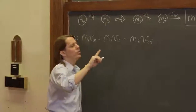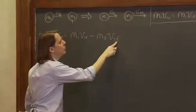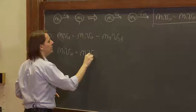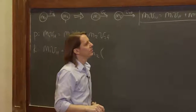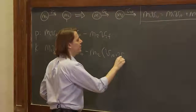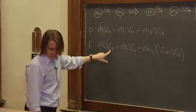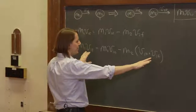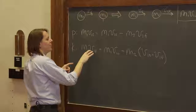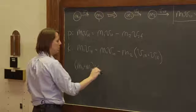We want to use the second equation to substitute for v2f, since both are unknowns and we need to eliminate one. So we replace v2f with (v1_initial + v1f), giving: m1·v1f = m1·v1_initial minus m2·(v1_initial + v1f). Now we need to collect the v1f terms. There's one on the left and one from expanding the right — it's minus m2·v1f — so bringing it over gives m1·v1f + m2·v1f, which is (m1 + m2)·v1f.